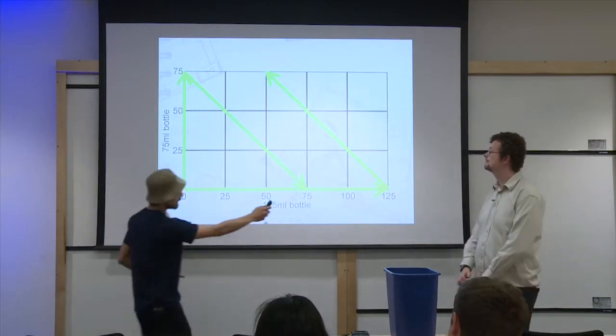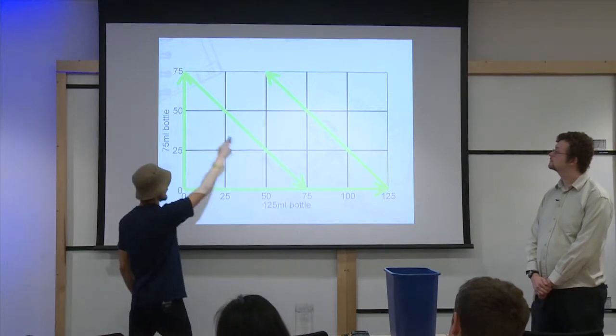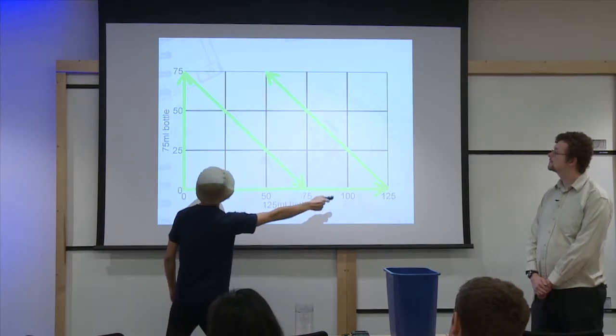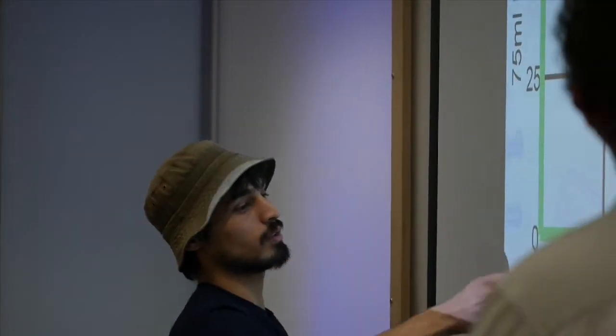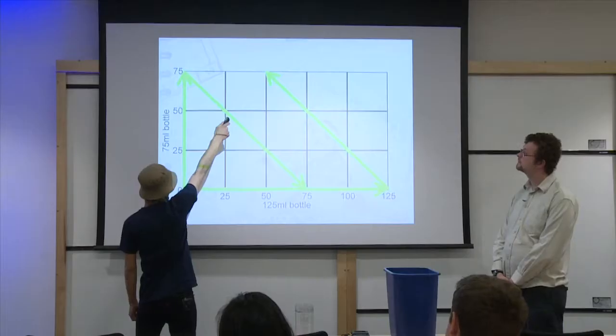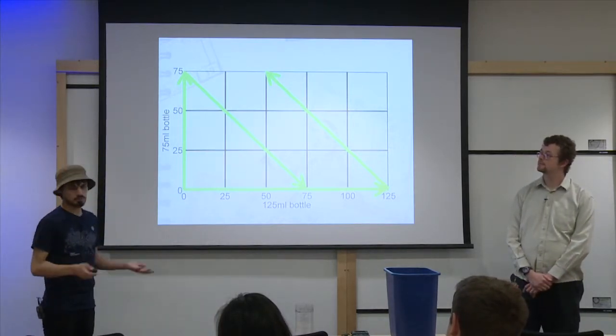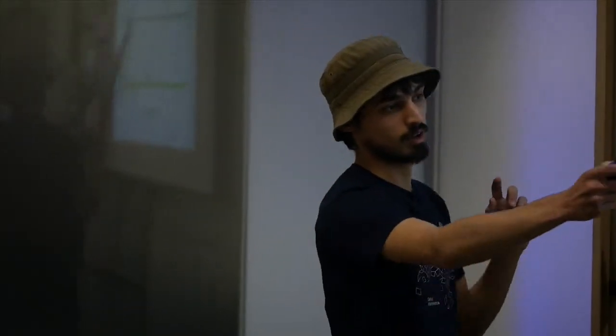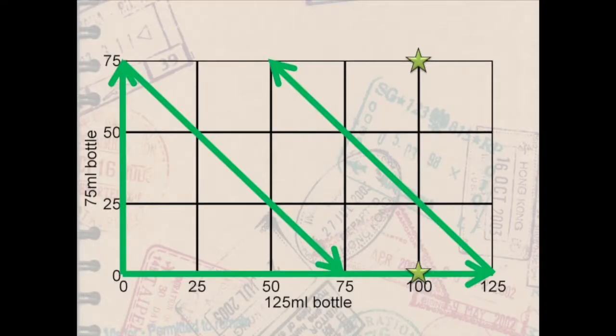But we could fill. And then once we've got some number here, we can pour it into the other. And that equates to going diagonally. So here we add 125 and we filled into the 75. Then we go all the way up to the top there. And then that leaves 50 in the 125 milliliter bottle and 75 in the smaller bottle there. So now we've got where we start. We're starting at 0, 0. We need to work out where we're going to end, which is any of these two stars here. So that's either 100 in the 125 milliliter bottle with 75 milliliters in the 75 milliliter bottle, or 125 with zero in the smaller bottle.